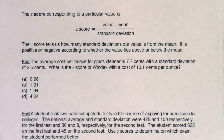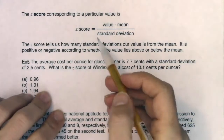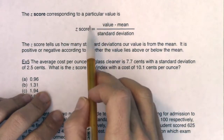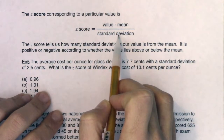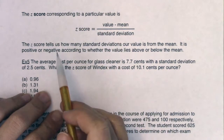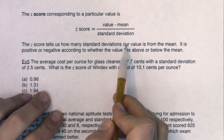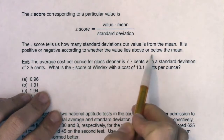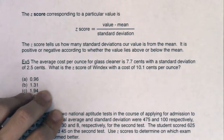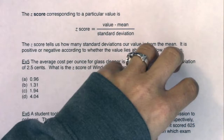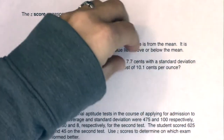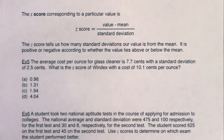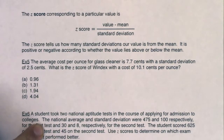Let's take a moment and review the formula we picked up back in Chapter 2 for z-scores. A z-score corresponding to a particular value is: value minus mean, over standard deviation. The z-score tells us how many standard deviations our value is away from the mean. It is positive or negative according to whether values lie above or below the mean. Z-scores take data from different scales and different distributions and put them on a common scale, allowing us to compare data from different distributions — we're going to see an example of that in Example 6.